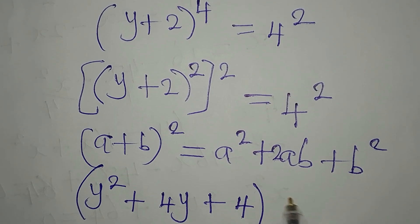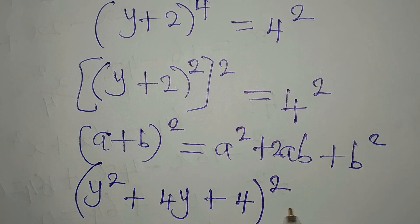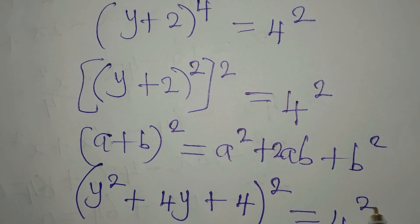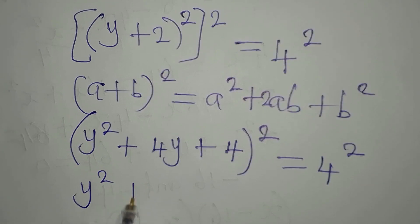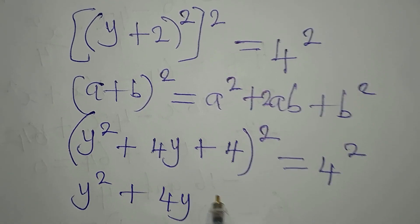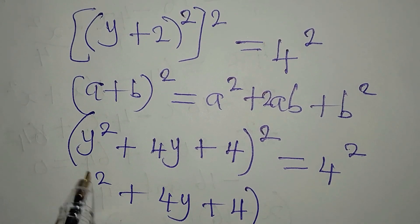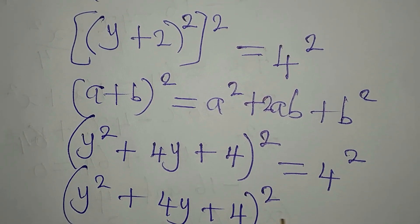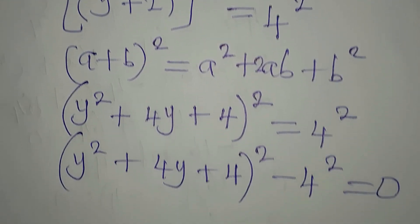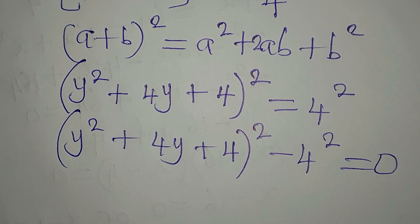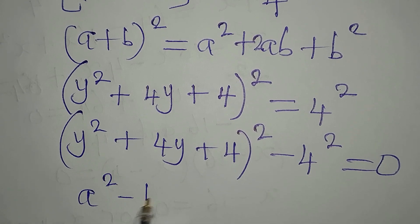Now this is what is in the bracket, with the power of 2 outside. So we have (y squared plus 4y plus 4) to the power of 2, minus 4 to the power of 2, equals 0. We can now apply the difference of two squares, since a squared minus b squared is called difference of two squares.